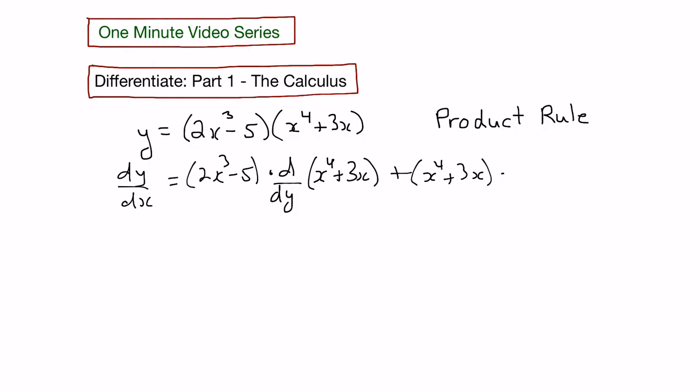times the derivative of the first function. So this becomes 2x cubed minus 5, and the derivative of x to the fourth plus 3x would be 4x cubed plus 3,